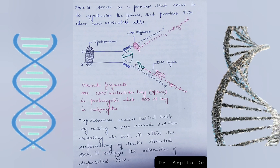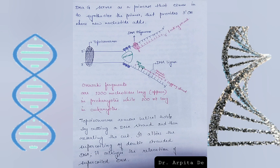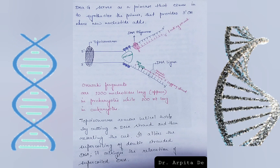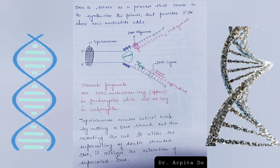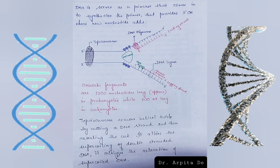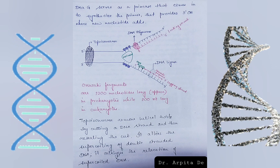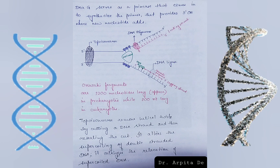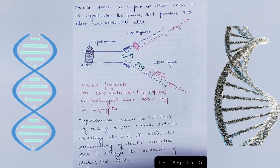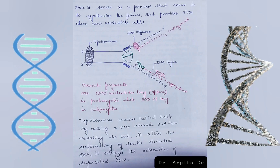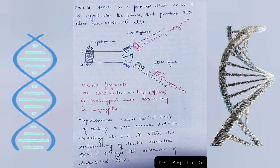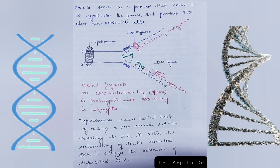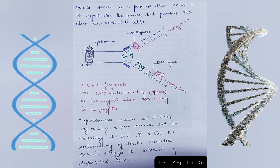Looking at the diagram, you can see the leading strand being synthesized continuously — this is called continuous synthesis — while the lagging strand is being synthesized discontinuously. The Okazaki fragments are approximately 1200 nucleotides long in prokaryotes, while they are about 200 nucleotides long in eukaryotes.